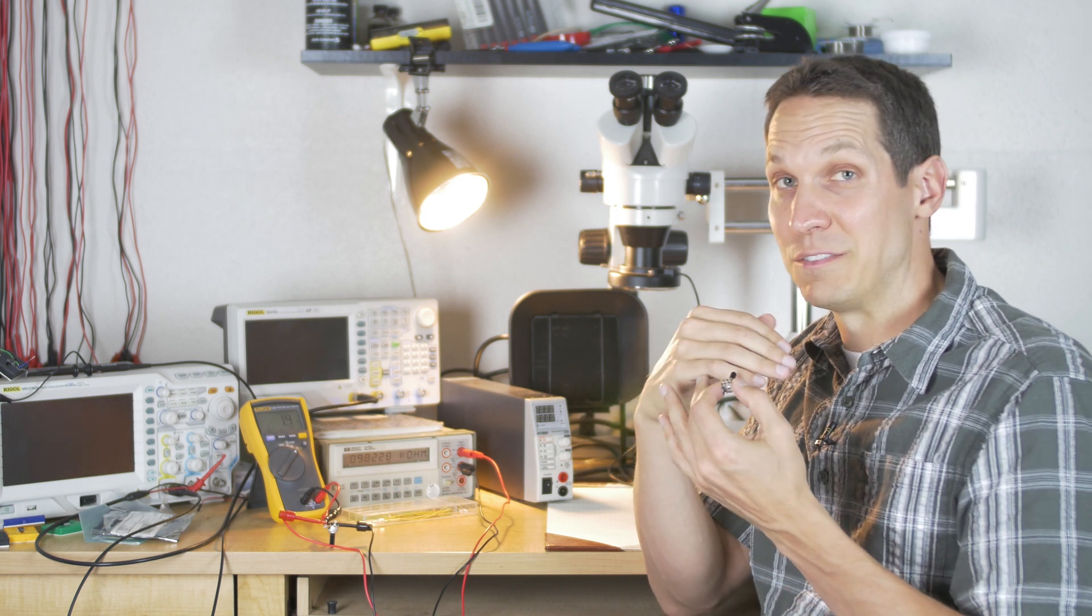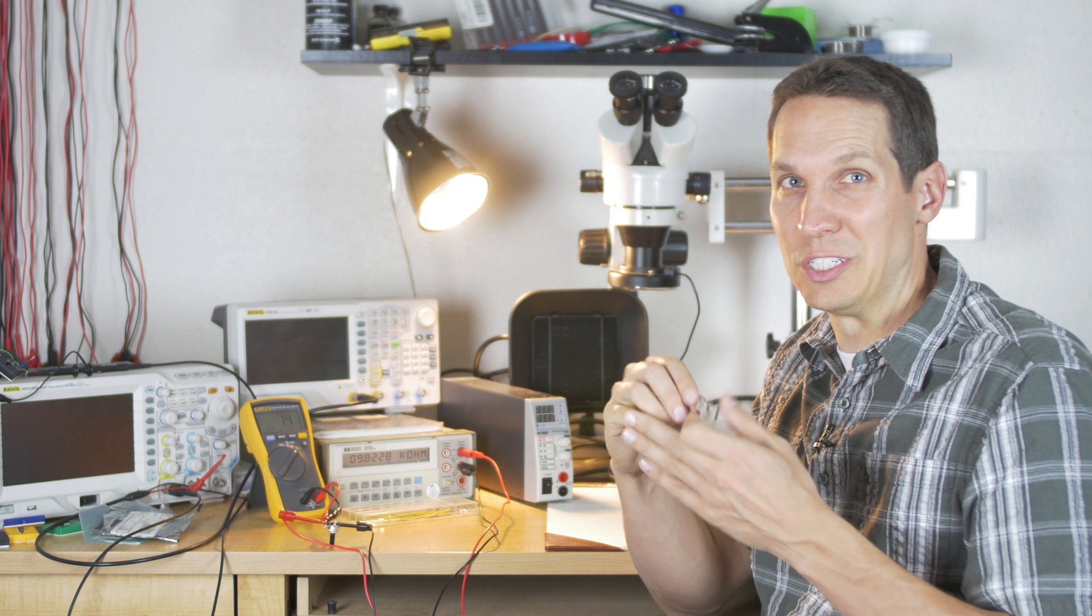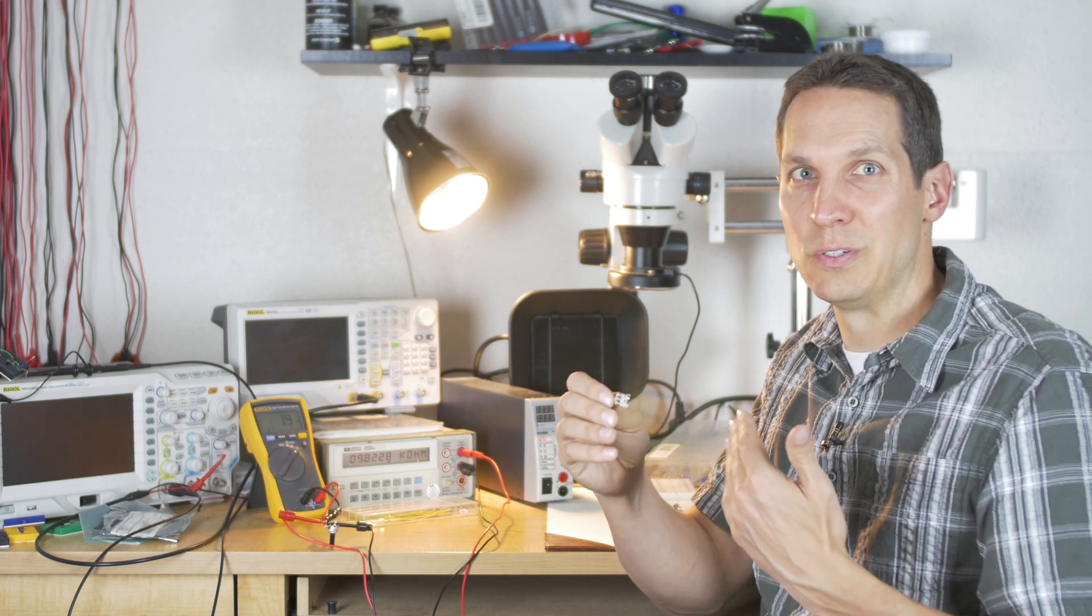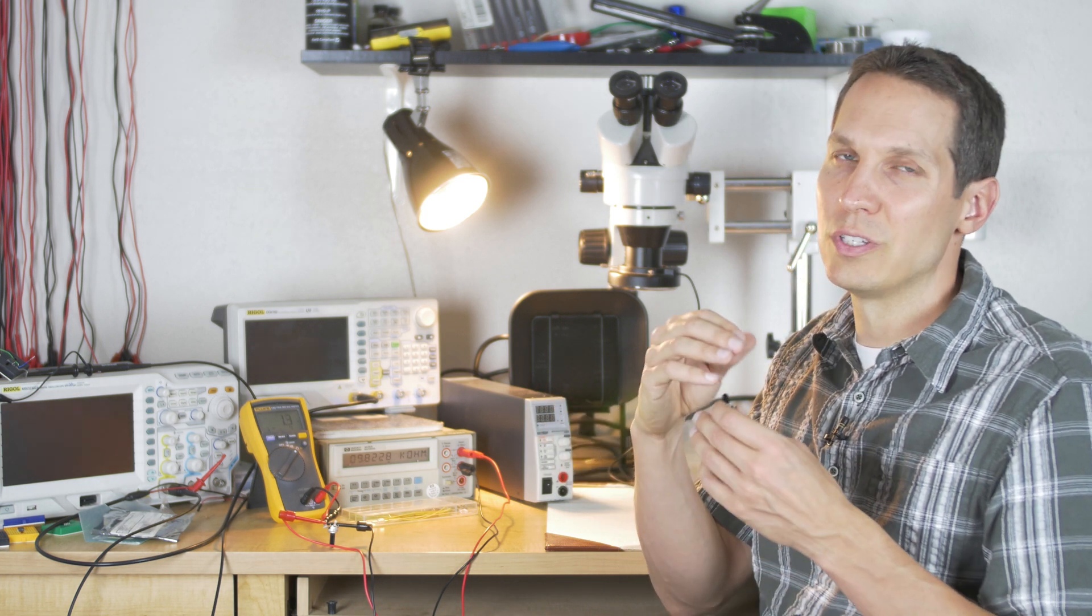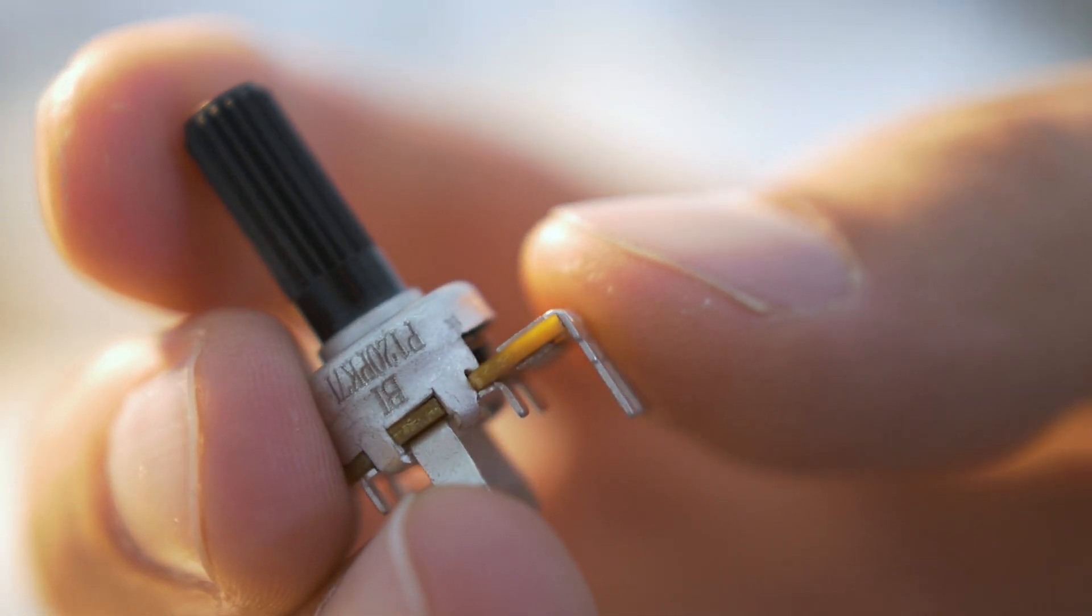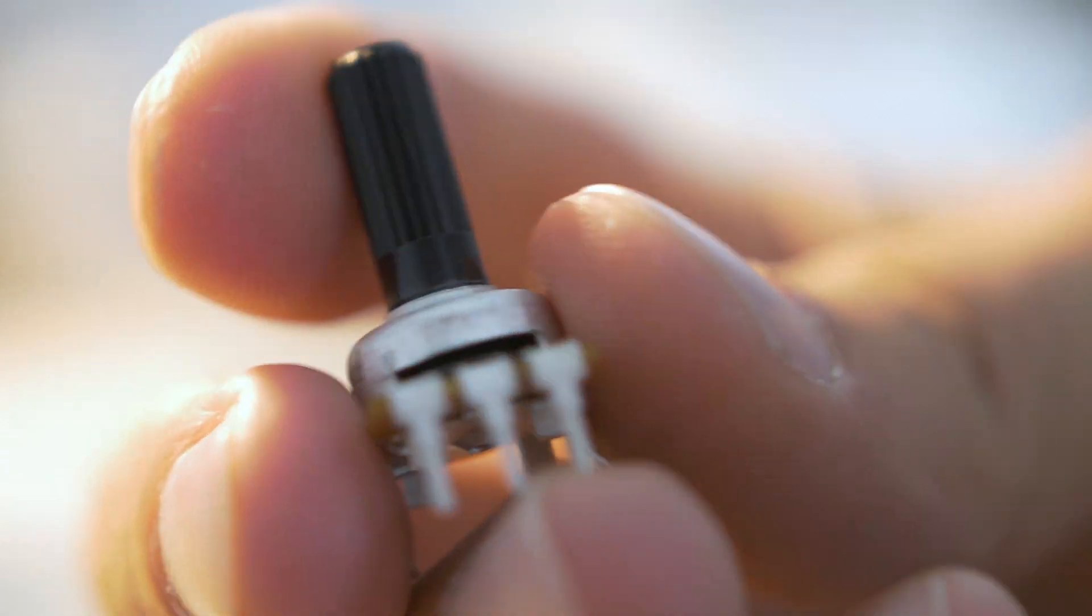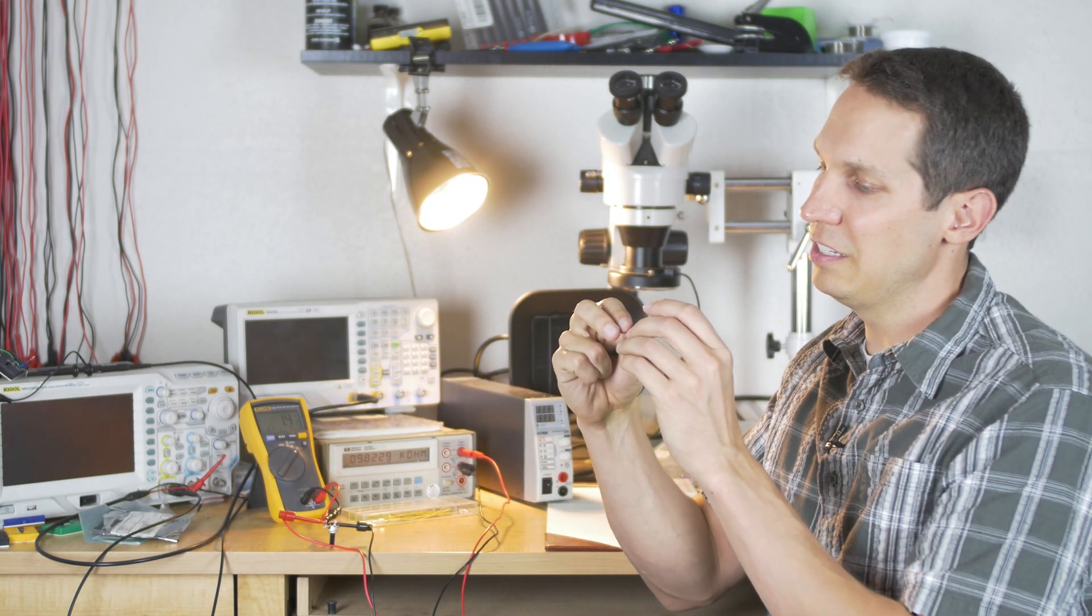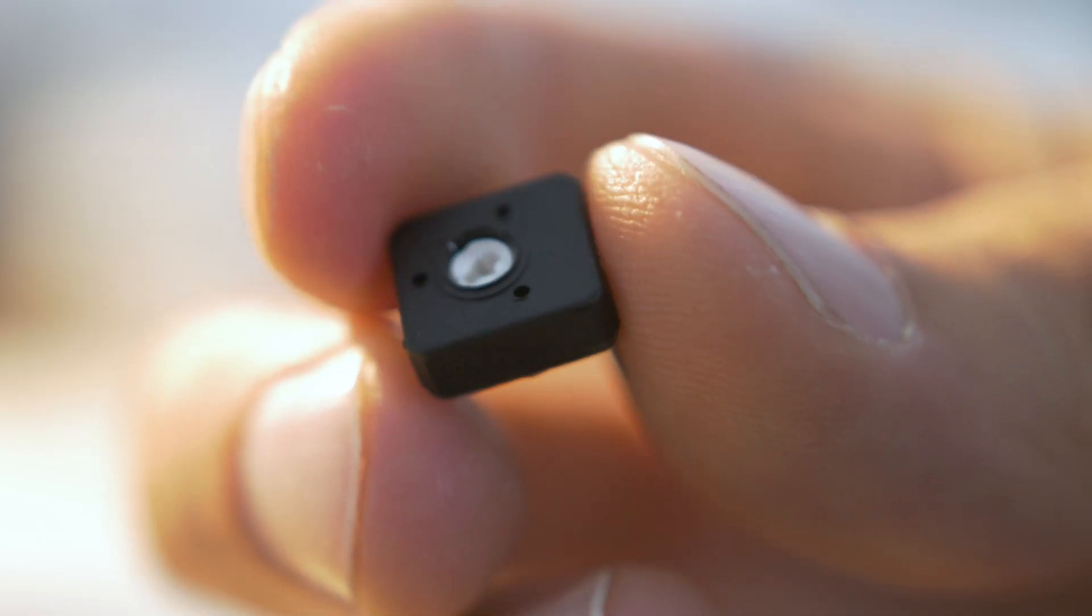They can have different names as well - it could be terminal one or terminal A, terminal two or B, wiper terminal. There's a bit of variation in the language that's used, but almost always there are three connection points. As you can see on this potentiometer and even on this trimmer, you can see just three plugs.